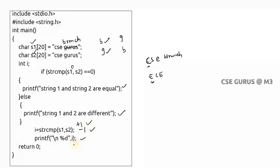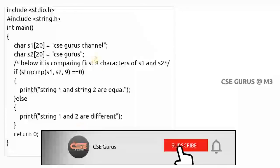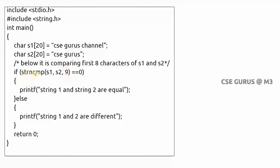Coming to strncmp — if I don't want to compare all characters but only the first n characters, I use strncmp. Here I've given the value nine, so I'm checking the first nine characters in each string. Including the space, both nine-character substrings are the same, so it returns equal. Remember that the space is also included in the count. If I used strcmp without n it would be not equal, but with the first nine characters it is equal.